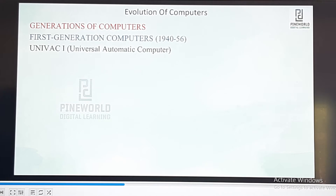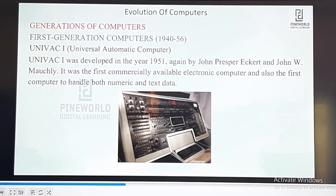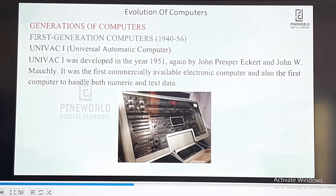The third example is UNIVAC 1 — Universal Automatic Computer. It was developed in the year 1951, again by John Presper Eckert and John W. Mauchly. It was the first commercially available electronic computer and also the first computer to handle both numeric and text data.